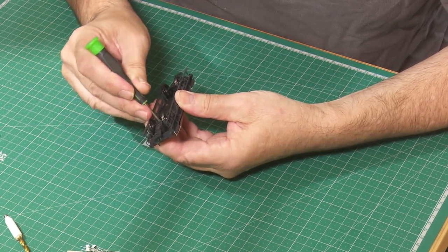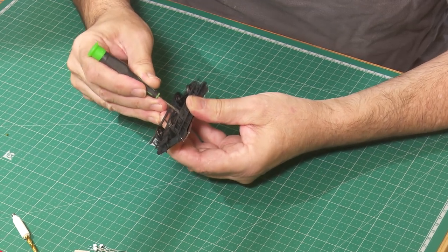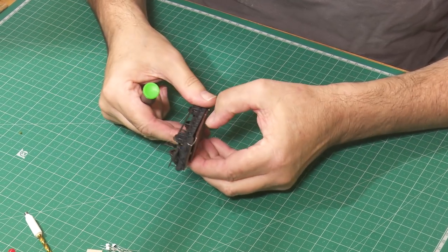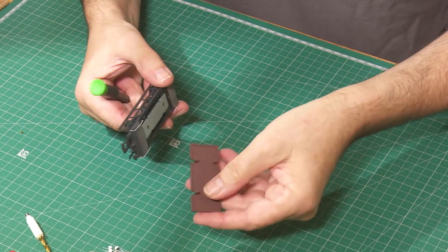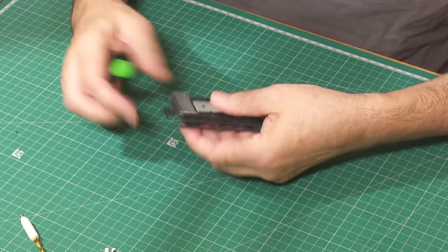To separate the base from the chassis, there are four small locating lugs that need to be pressed in.